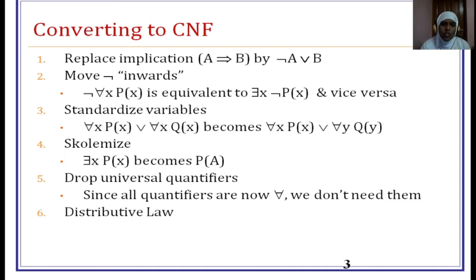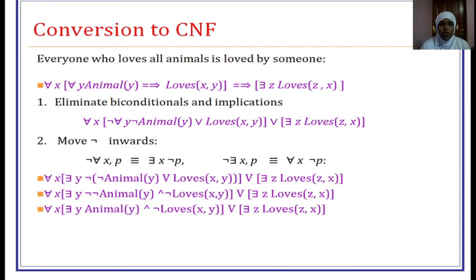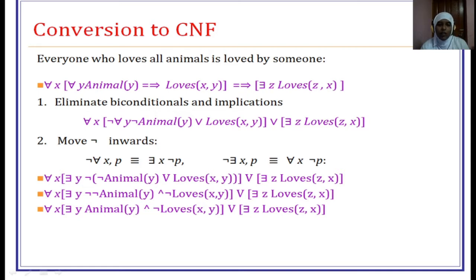Now we will see how these rules can be applied to one example: 'Everyone who loves all animals is loved by someone.' We try to write the sentence in predicate logic. For all X, for all Y: animal(Y) implies loves(X, Y). Loves is a binary predicate — X is the person who loves, Y is the animal. If this sentence is true, that implies there is some other group of people who loves the animal lover. So there-exists Z: loves(Z, X). We have three variables: X for the person who loves animals, Y for the animal, and Z for some other person who loves the animal lover.